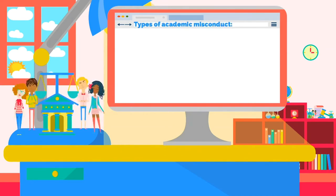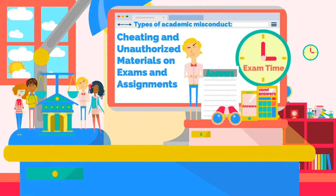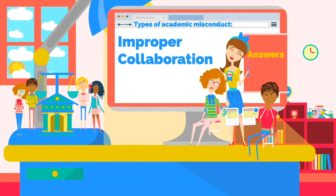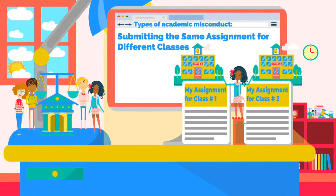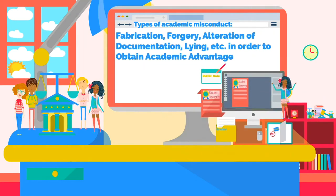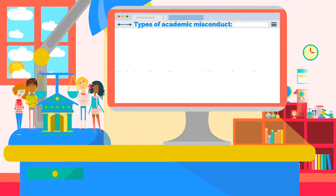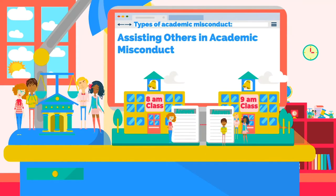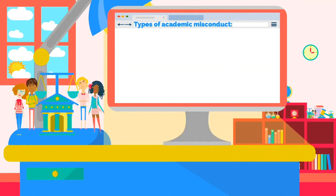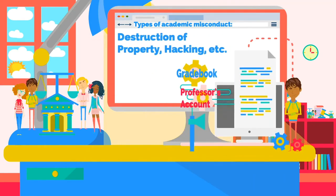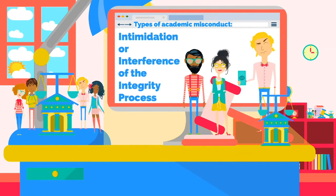Common types of academic misconduct include: cheating and the use of unauthorized materials on exams and assignments; improper collaboration; submitting the same assignment for different classes; fabrication, forgery, or alteration of documentation, lying, etc., in order to obtain academic advantage; assisting others in academic misconduct; attempting to commit academic misconduct; destruction of property, hacking, etc.; intimidation or interference of the integrity process; and plagiarism.